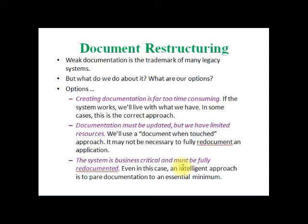This inventory table contains all applications developed in your organization. From that list you analyze and prioritize to select candidates for re-engineering. After identifying the application, you must do document restructuring. Weak documentation is a trademark of many legacy systems. Legacy systems are older systems that have drawbacks in their documentation. We need to modify and improve documentation. One option is that creating documentation is too time-consuming — if the system works, you live with what you have.